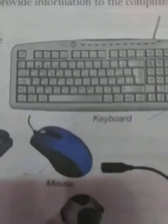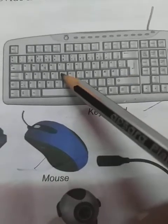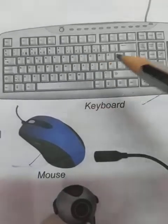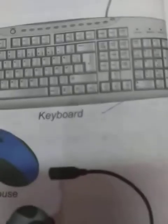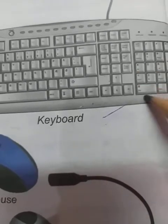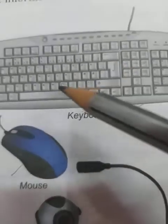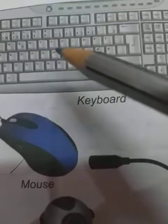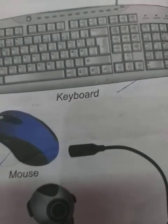This is your keyboard. It has alphabetic keys — we call them words — A, B, C, D and so on. It also has number keys: 1, 2, 3, 4, 5, and all. With the help of the keyboard, we can give information to the computer by words and numbers.